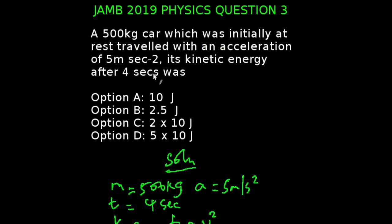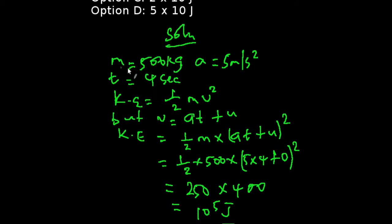JAM 2019 physics question number 3. A 500 kilogram car, which was initially at rest, traveled with an acceleration of 5 meters per second squared. Its kinetic energy after 4 seconds was? In this question, we are given a mass of 500 kg, acceleration of 5 meters per second squared, and a time of 4 seconds. The formula for calculating kinetic energy is half mass times velocity squared.